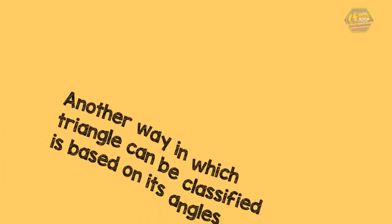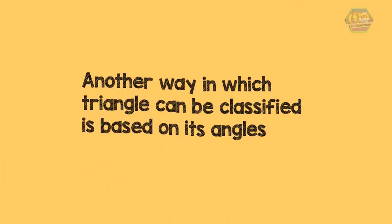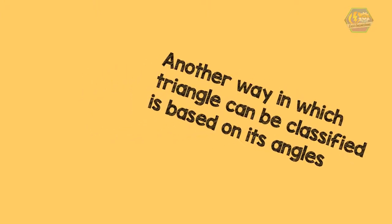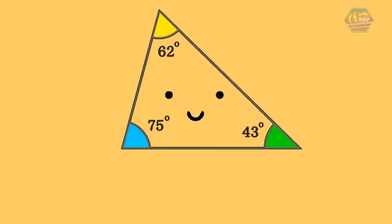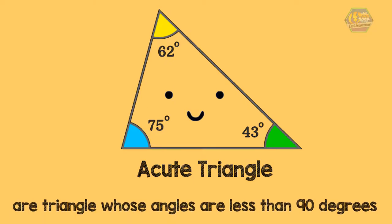Another way in which triangles can be classified is based on their angles. This is called the acute triangle. Acute triangles are triangles whose angles are all less than 90 degrees.